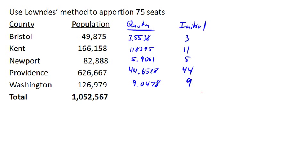Using Lowndes' method in Rhode Island, it starts out the same way with the quota and then our initial allocation, which in this case only totals to 72 seats.